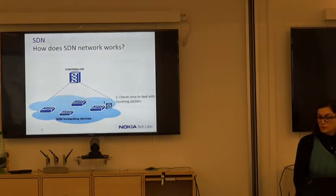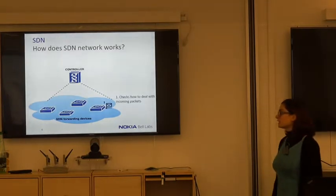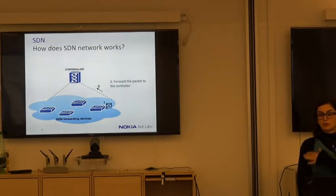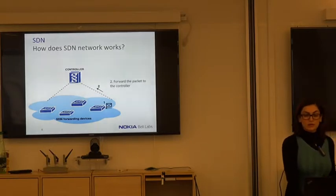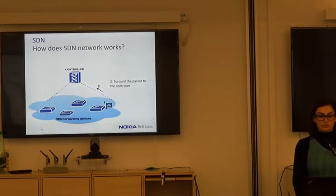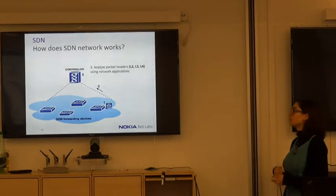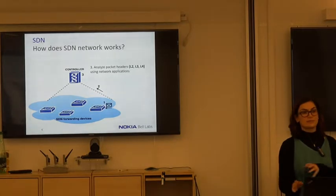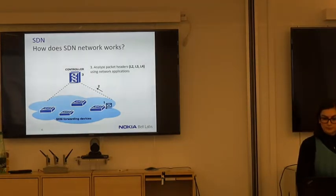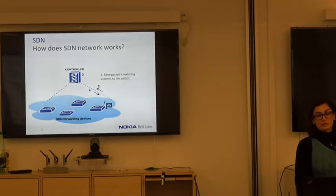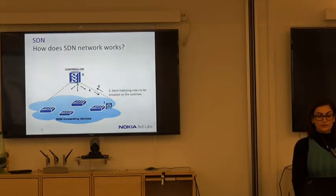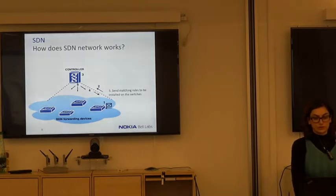How does it completely work? When a new packet arrives to an SDN switch, it checks a set of rules to see if it knows how to deal with this packet. If it doesn't know, it forwards the packet to the controller. The controller analyzes the packet, consults the network applications, and determines what to do with this type of packets — we call it a flow. It then sends the packet and matching actions to the switch, and installs the list of rules to be used on the switches along the network topology.